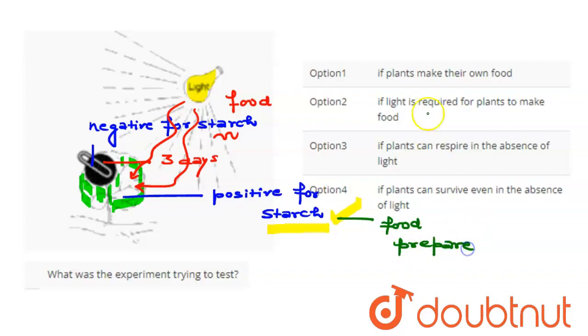Let's look at the options. First, if plants make their own food - this option is wrong because as we know, the major source for making food by plants is light.